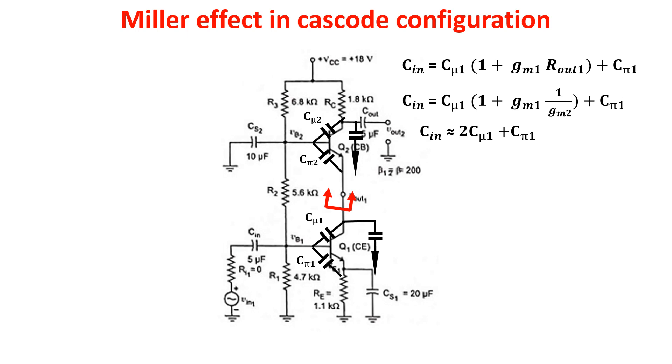This means that our dominant pole has now a frequency larger than the simply common emitter configuration, thus enlarging the bandwidth.